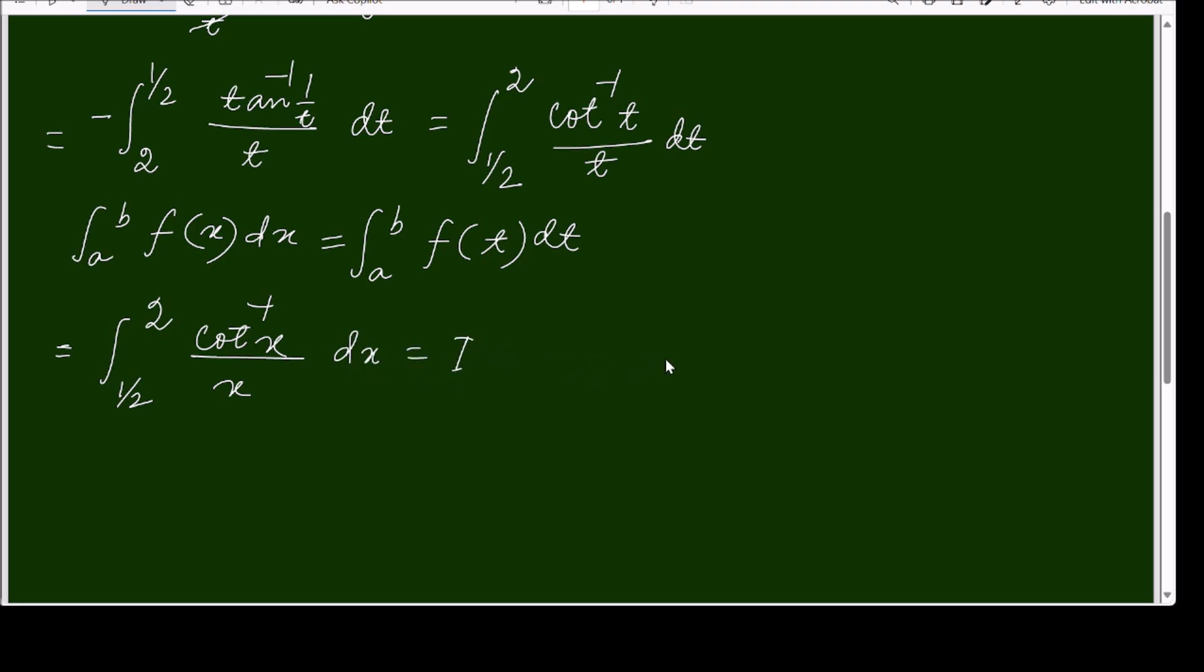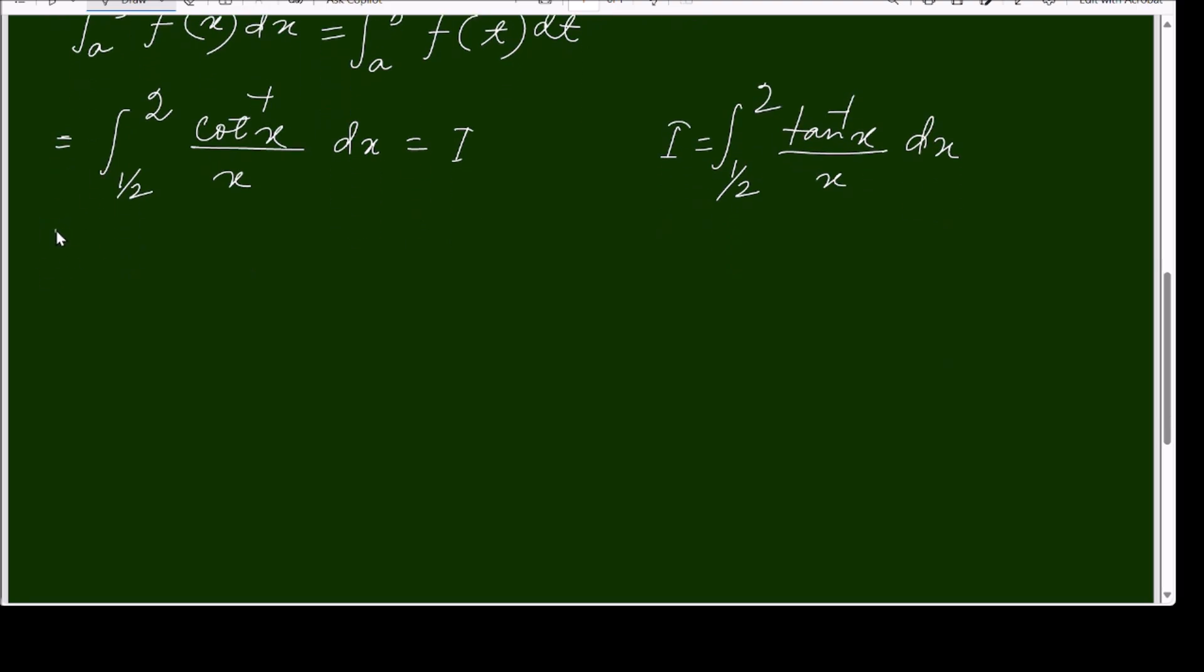Now I, and previous I was given half to 2 tan inverse x over x dx. So I'll add this. Adding them, we'll get twice I equals half to 2 tan inverse x plus cot inverse x over x dx. And we know that tan inverse x plus cot inverse x equals π by 2.